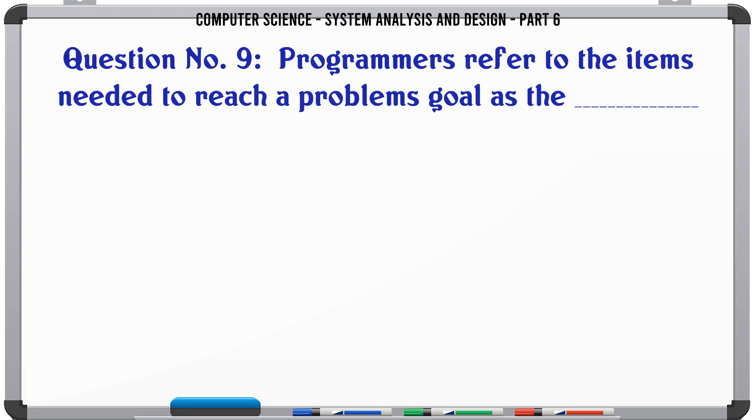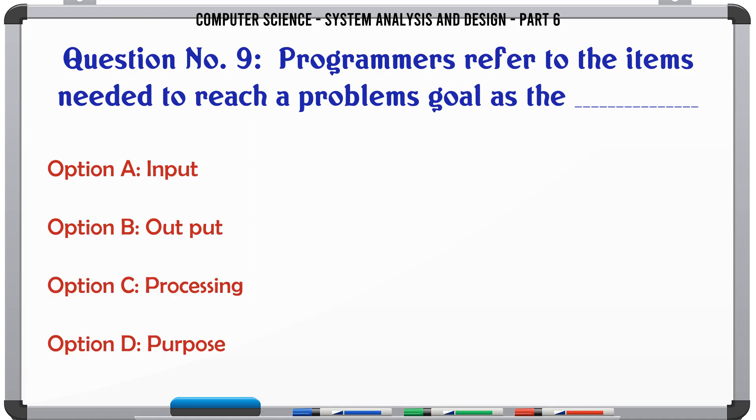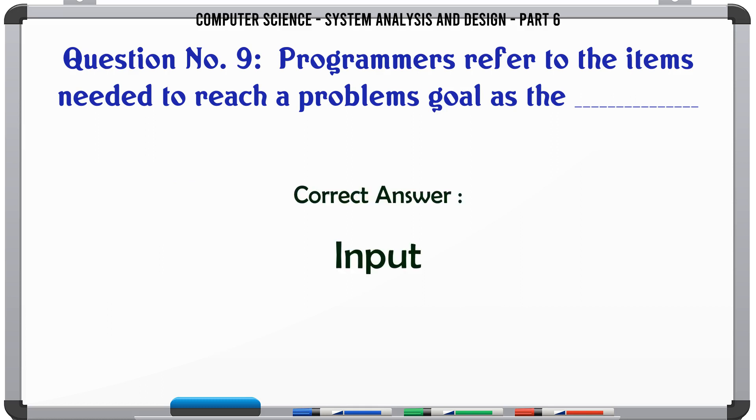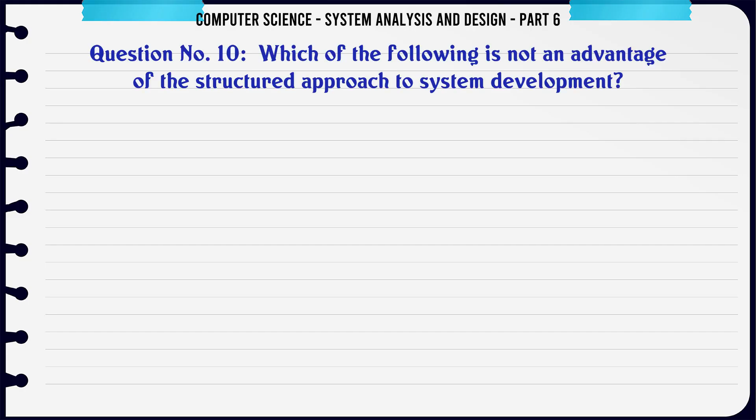Programmers refer to the items needed to reach a problem's goal as the: A. Input, B. Output, C. Processing, D. Purpose. The correct answer is: Input.